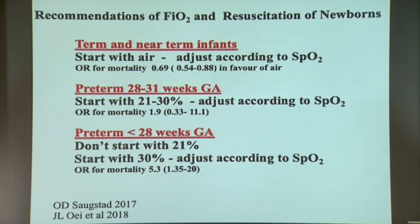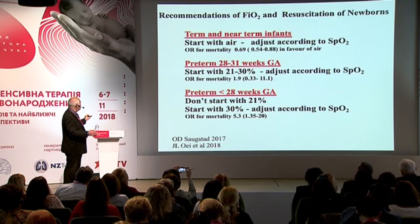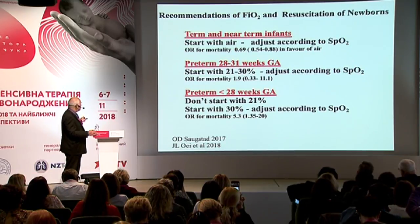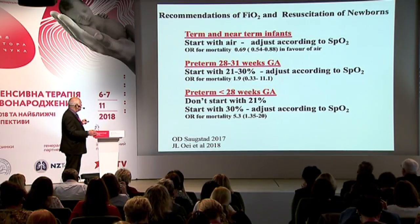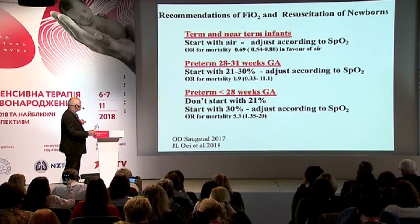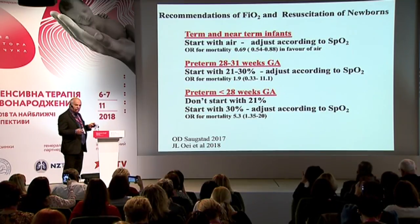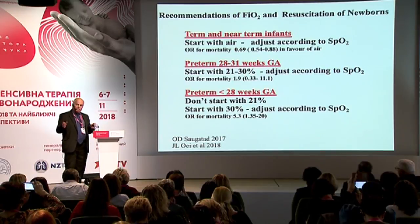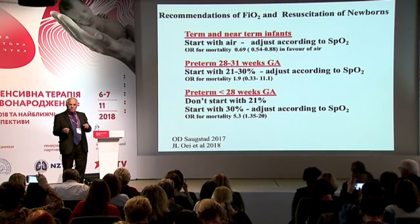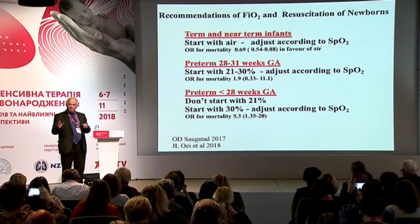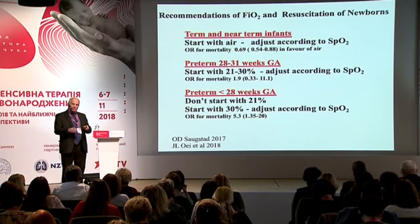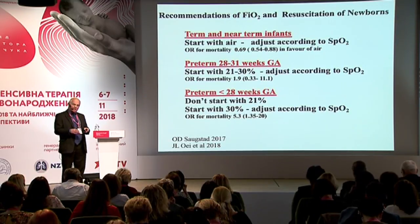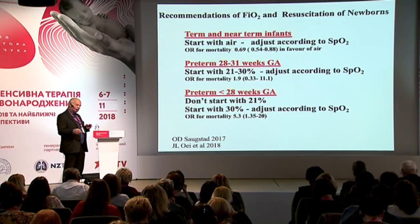This is what we now suggest: term and near-term infants, start with air, adjust according to saturation. Preterm babies between 28 and 31 weeks, start with 21–30%, adjust according to saturation. Preterm babies less than 28 weeks, do not start with air—we suggest 30%. The reason for 30% rather than 40% is simply that we don't have data on 40%; there have been no studies testing 40% versus 100% or 40% versus air. So there is a lot to do in this field still.